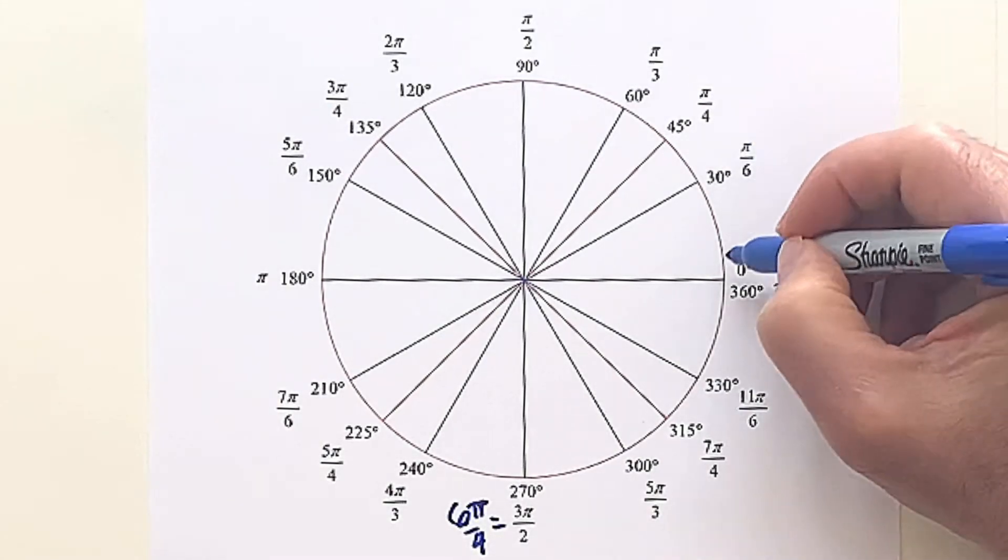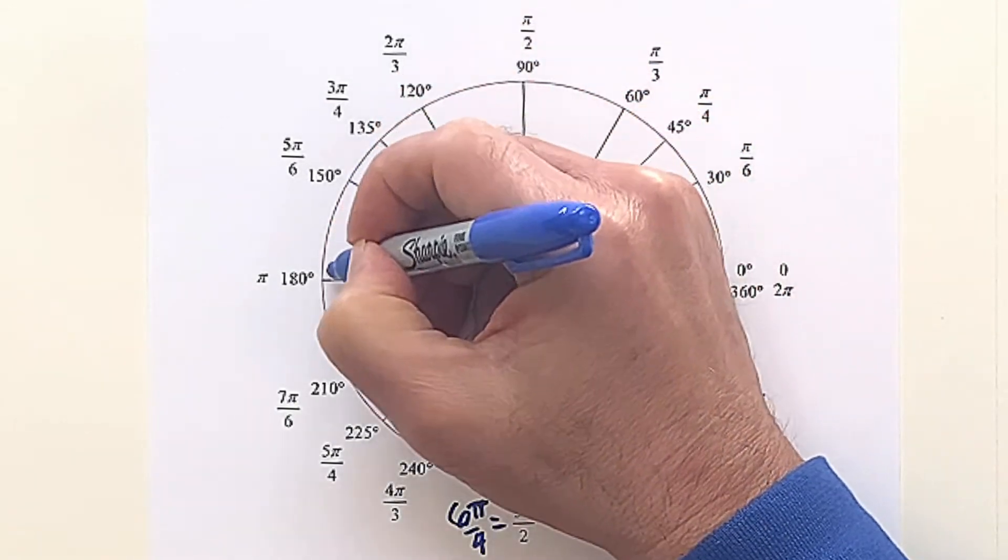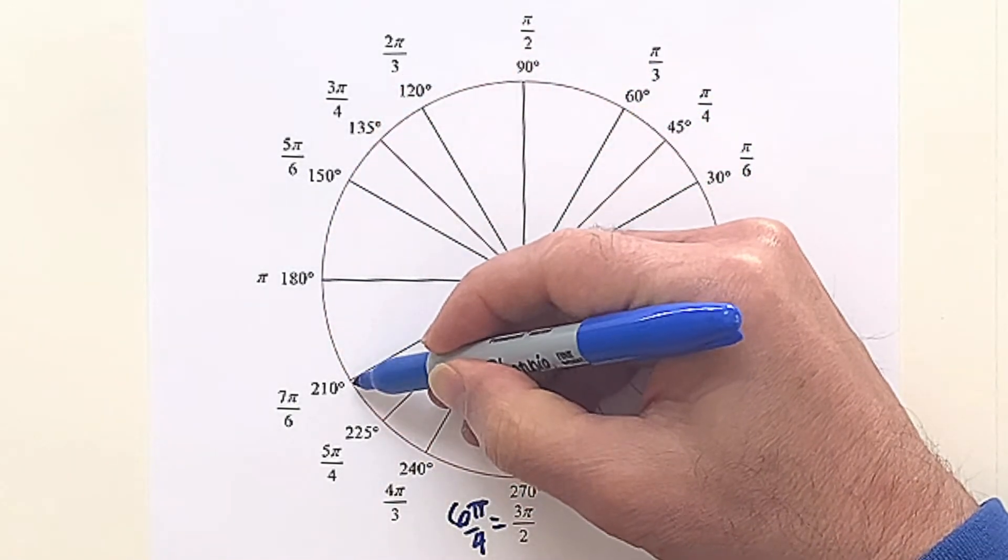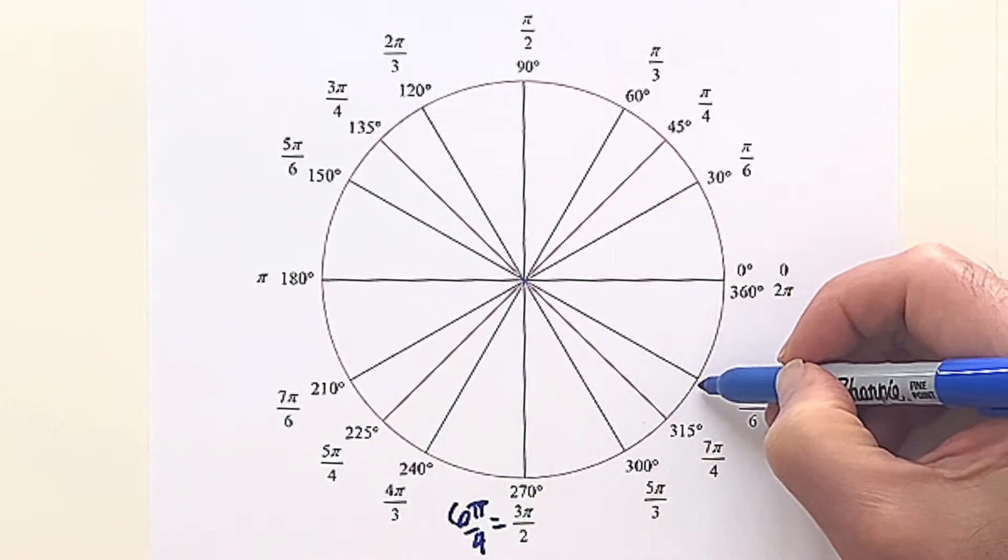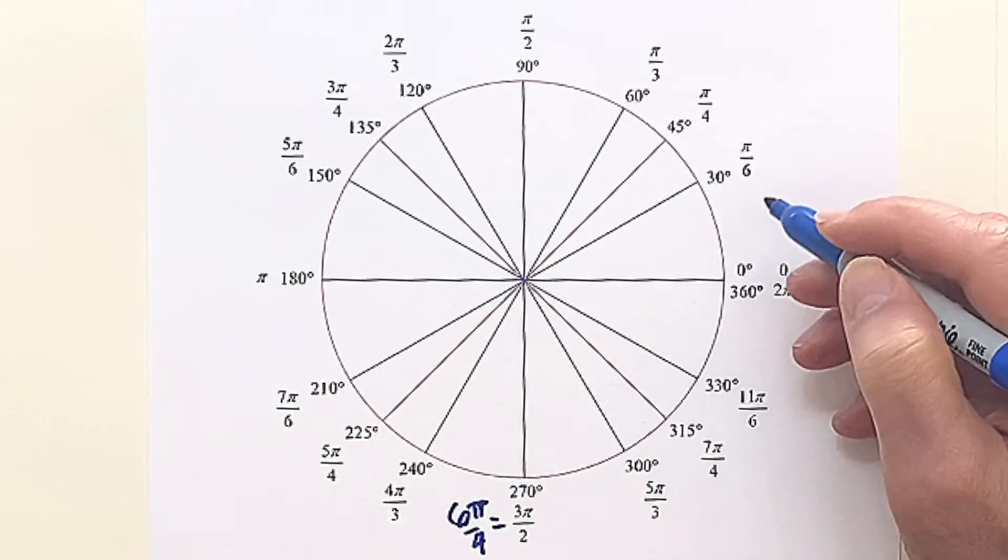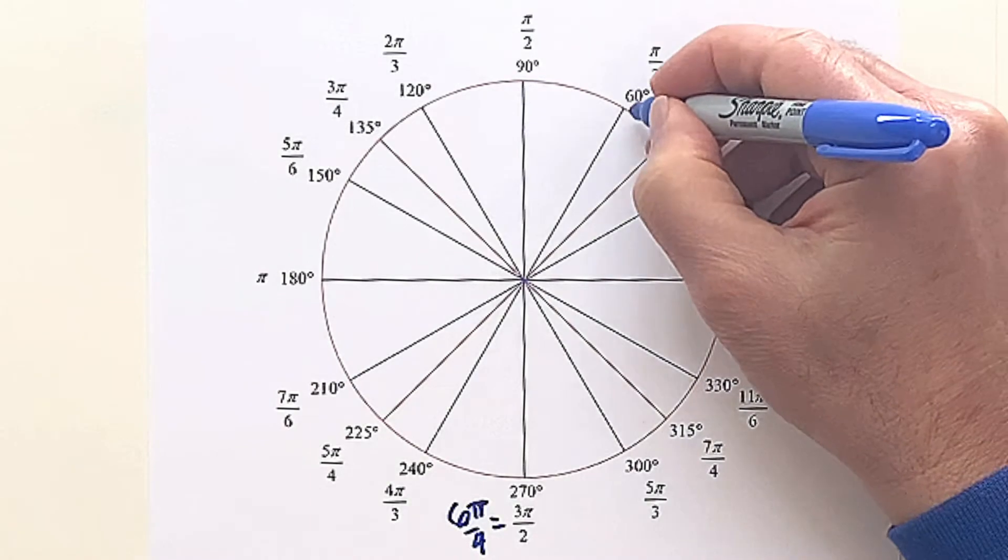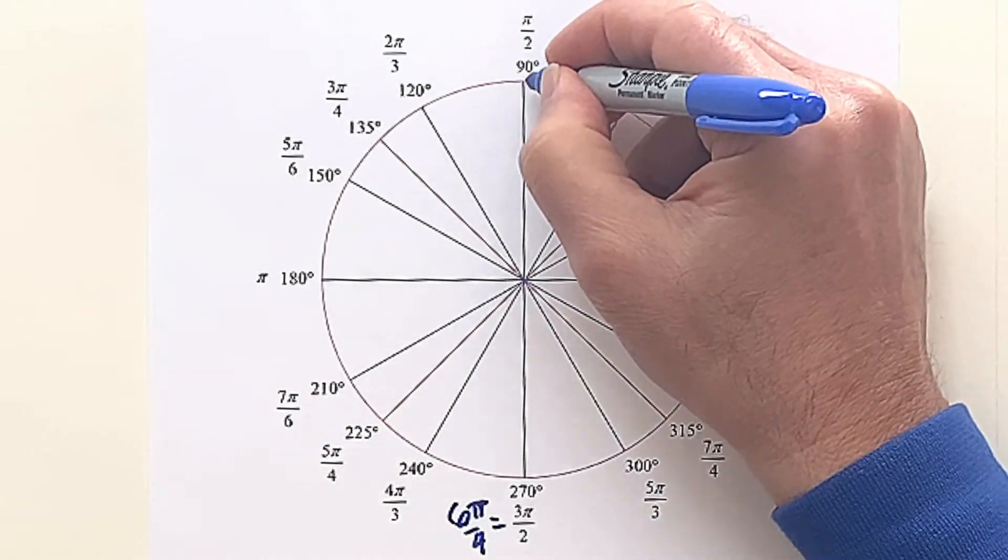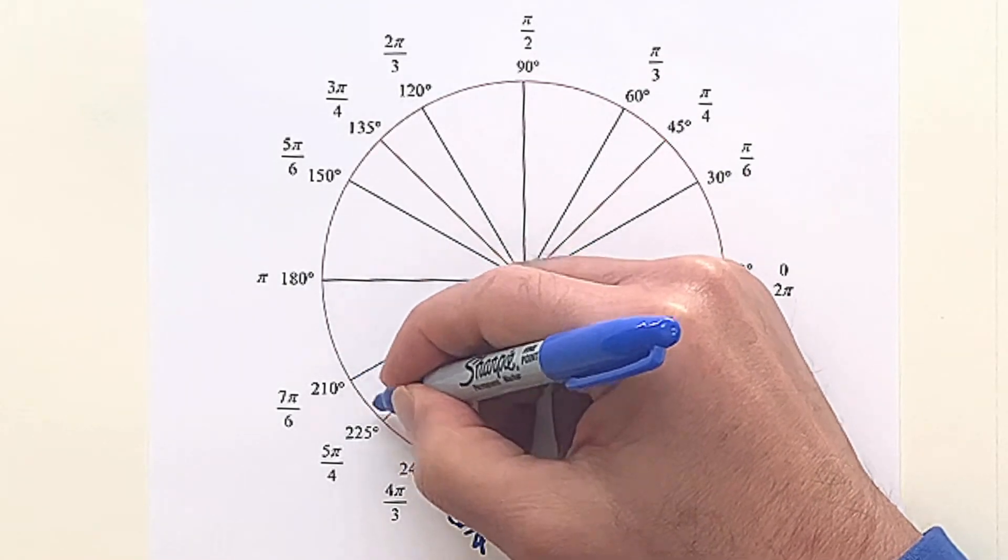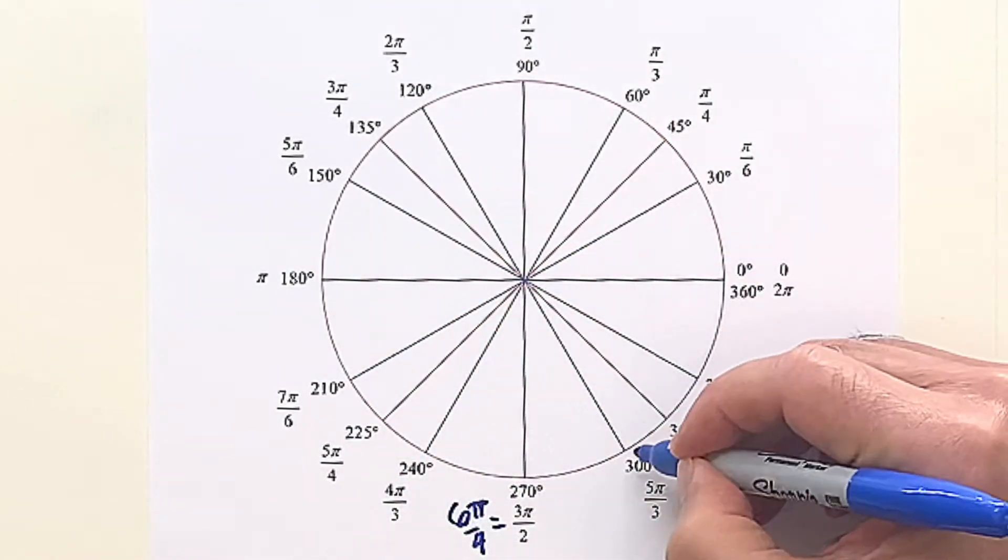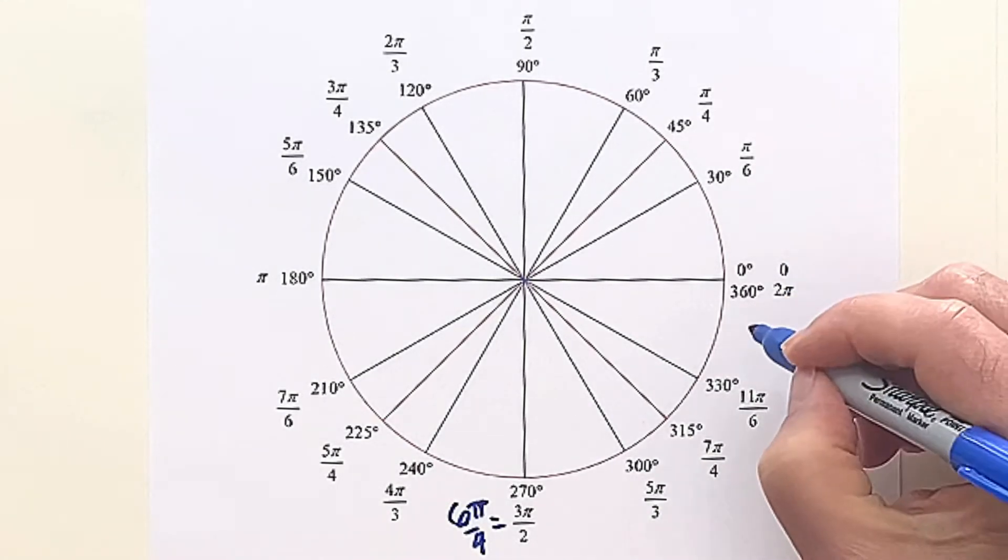Now if we go by 30 degrees, we go 30, 60, 90, 120, 150, 180, 210, 240, 270, 300, 330. You can forget the zero and just go 3, 6, 9, 12, 15, 18, 21, 24, 27, 30, 33, 36. It's easier, and put the zero on.